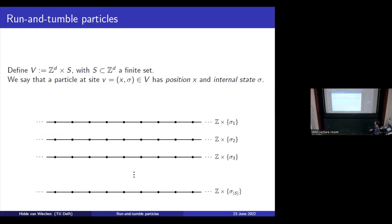For our single particle state space, we look at a layered space. We define V as Z^D times S. For every element in S, which we call the internal state, there is a layer. A particle is somewhere in this state space — if it's in the top layer, its position is determined by its place in Z and the internal state is sigma_1. This is the state space for a single run-and-tumble particle.